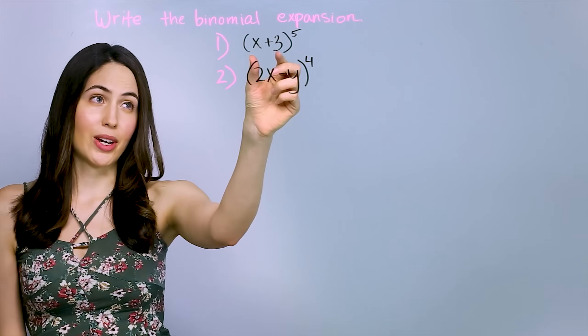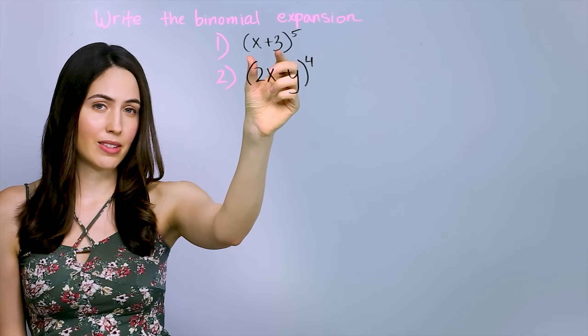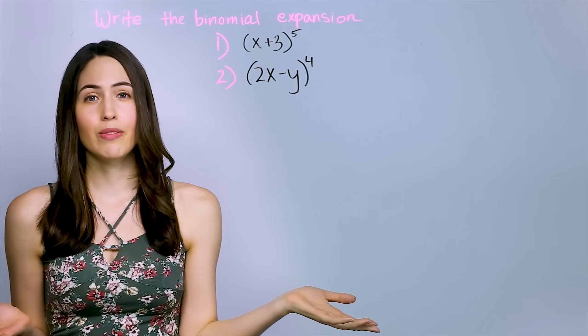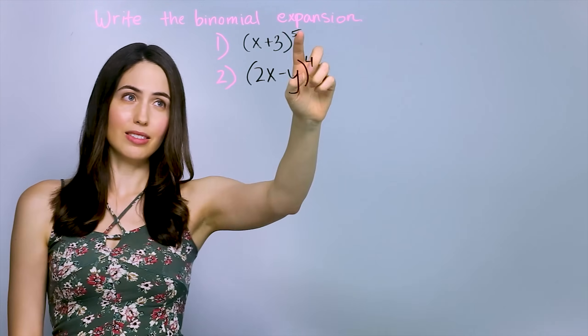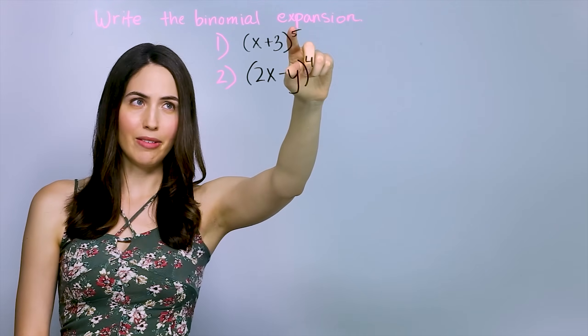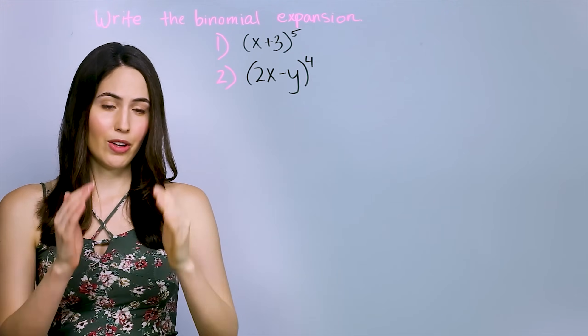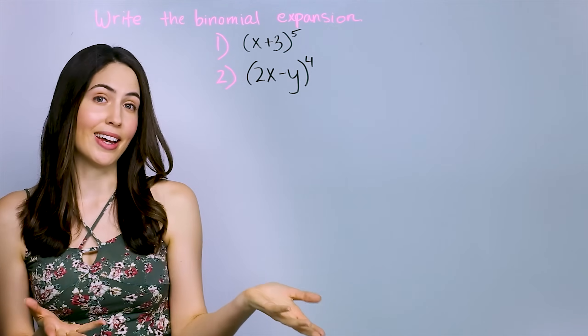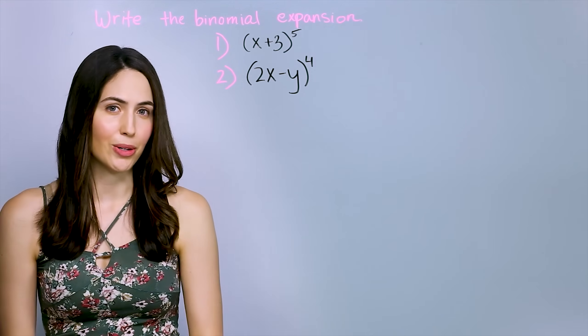The binomial is just this expression inside with two terms, because it's binomial, and the expansion is just what you would get if you multiplied it all out. Like here with this one with the power of 5, if you had 5 of those x plus 3s all multiplied together, it's what you would get in the end for your polynomial with all the terms added together.